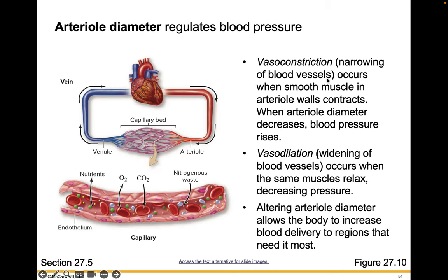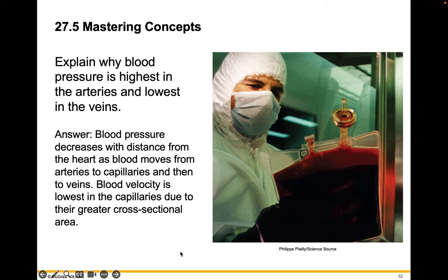Arterial diameter regulates your blood pressure. Vasoconstriction — narrowing of the blood vessels — occurs when smooth muscle in arterial walls contracts; when arterial diameter decreases, blood pressure rises. Vasodilation — the widening of your blood vessels — occurs when the same muscles relax, decreasing the pressure. Altering arterial diameter allows the body to increase blood delivery to regions that need it most. Explain in your own words why blood pressure is highest in the arteries and lowest in the veins.